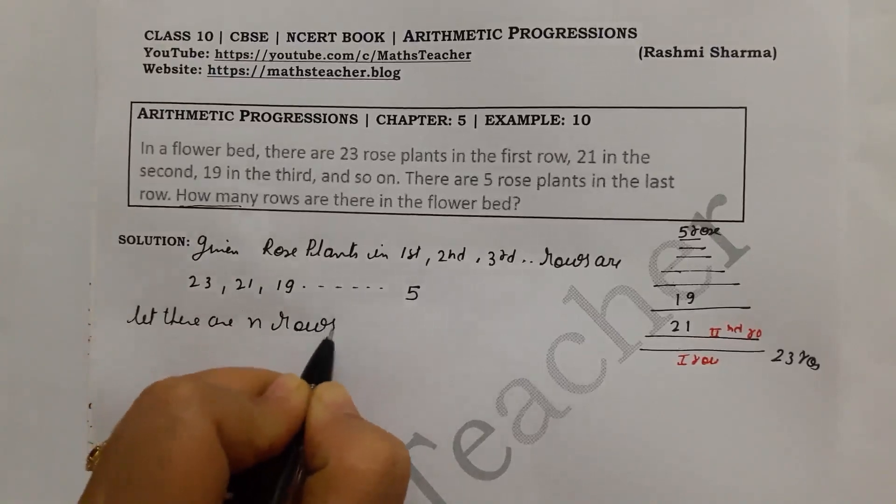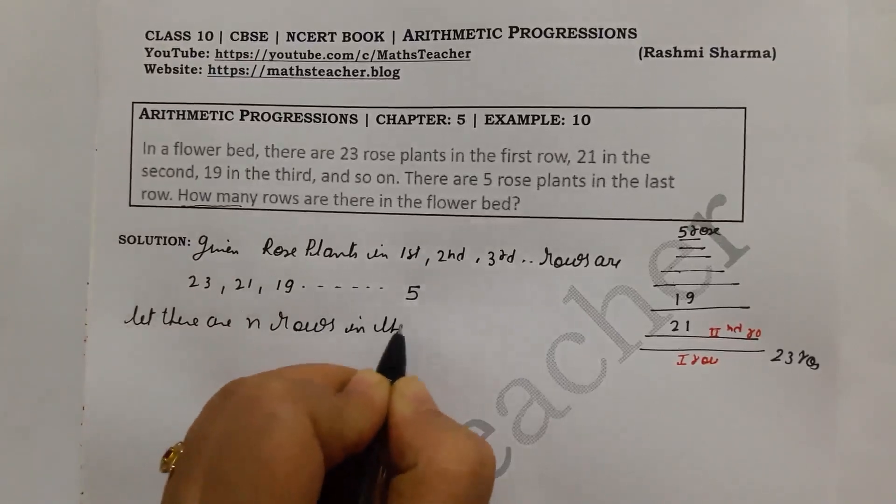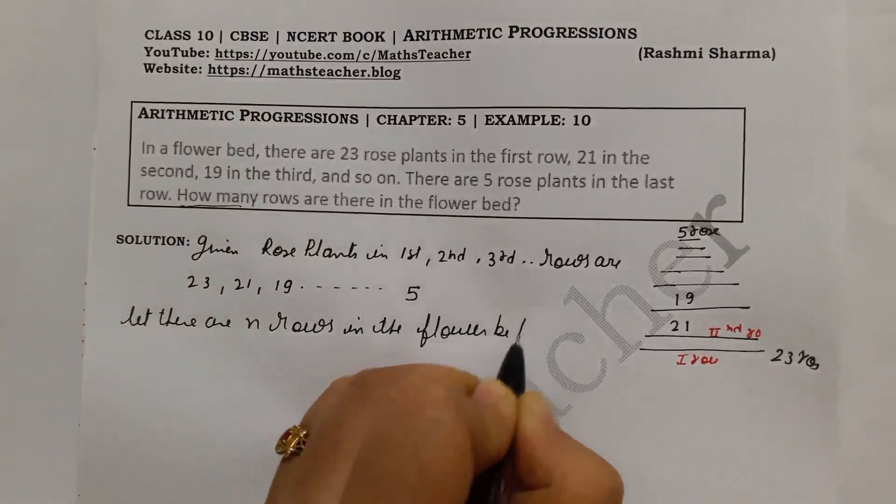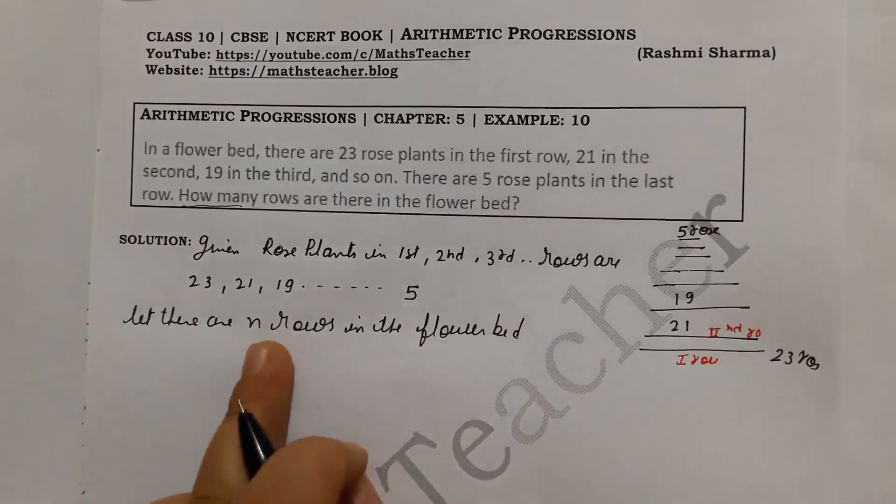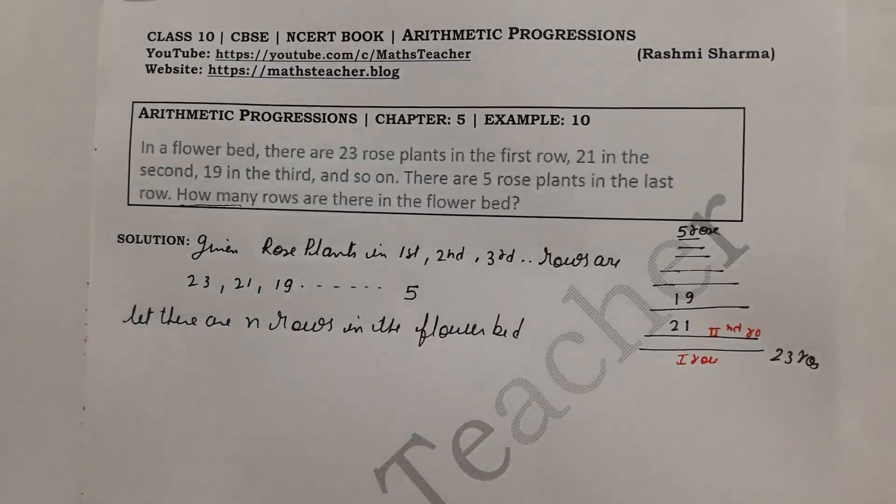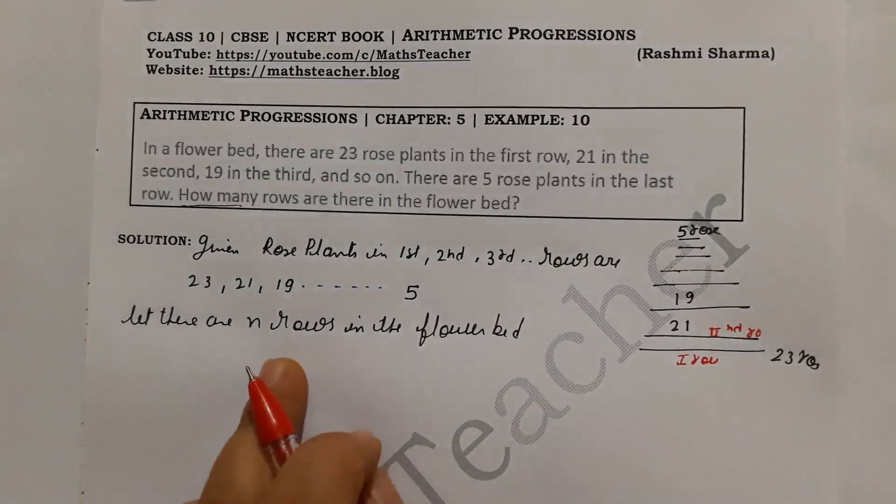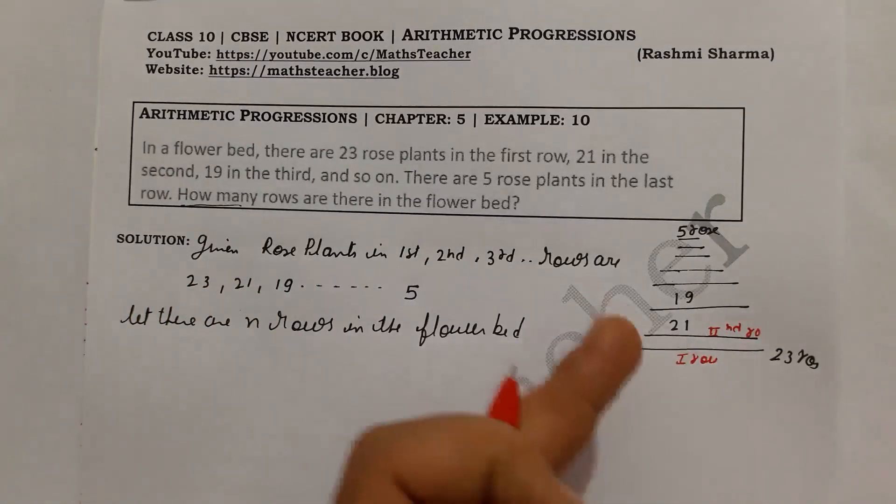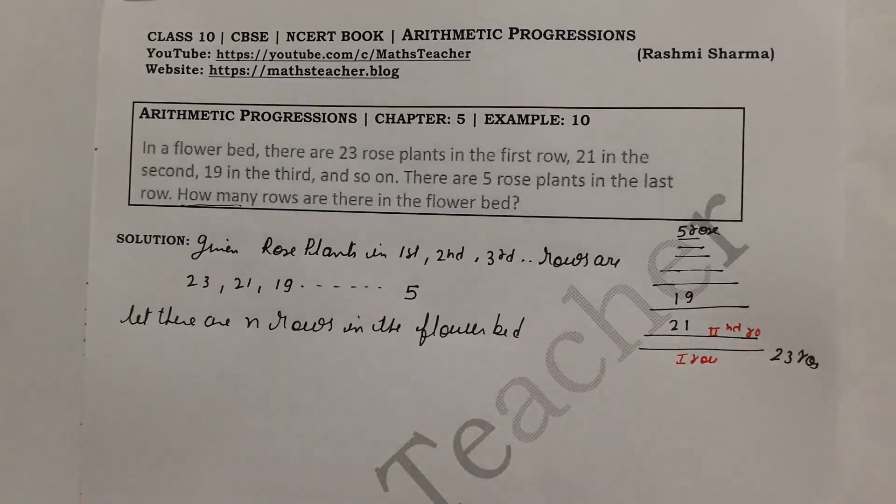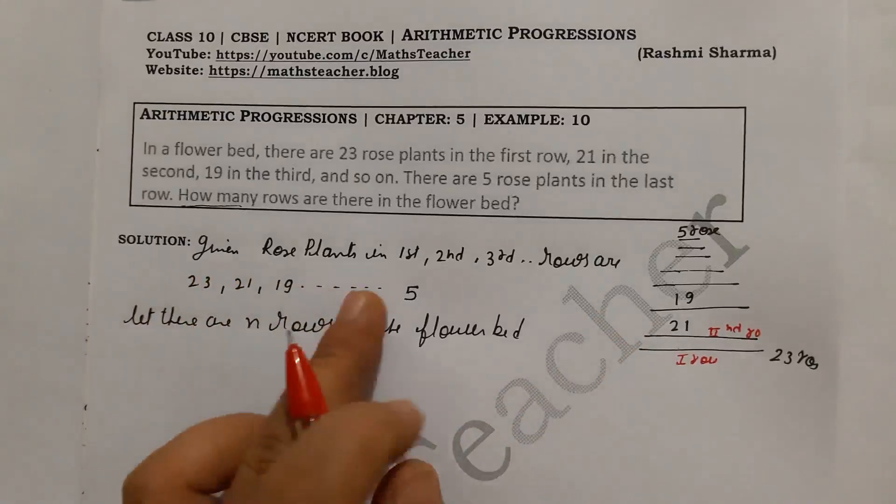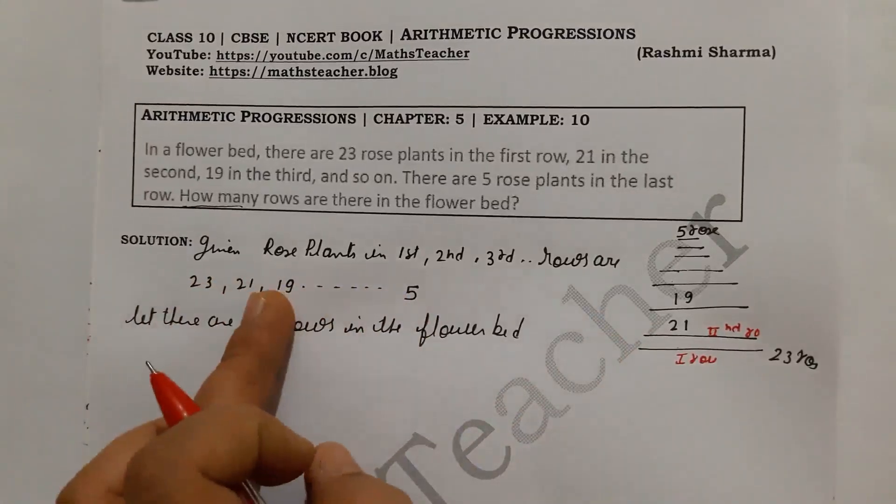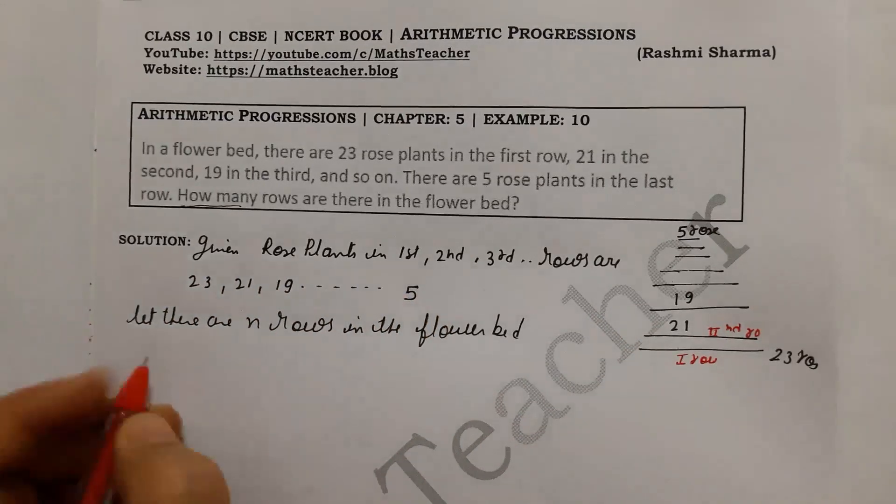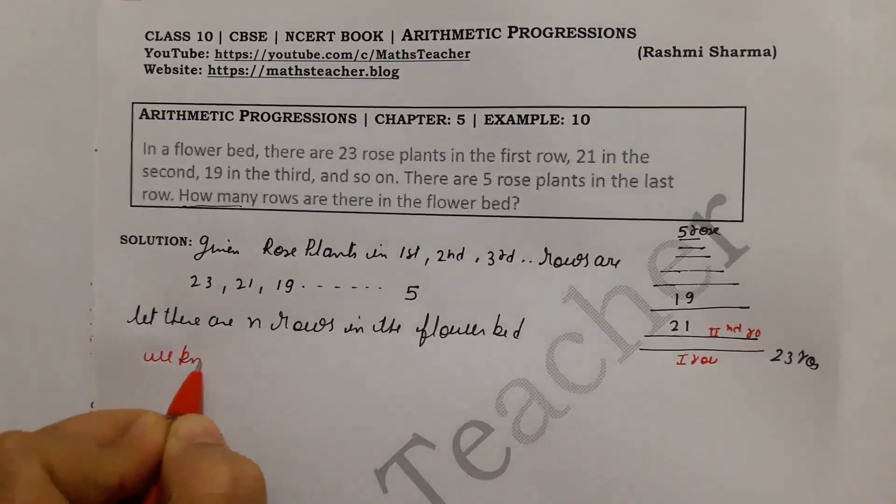We need to find n, the number of rows. The first term is given, and we need to find the common difference d. We have the last term, so we can use the formula for the nth term of an arithmetic progression.